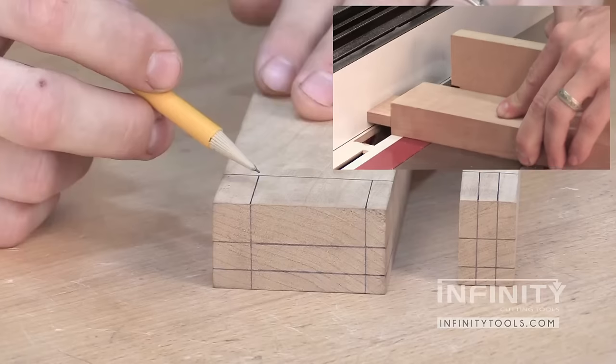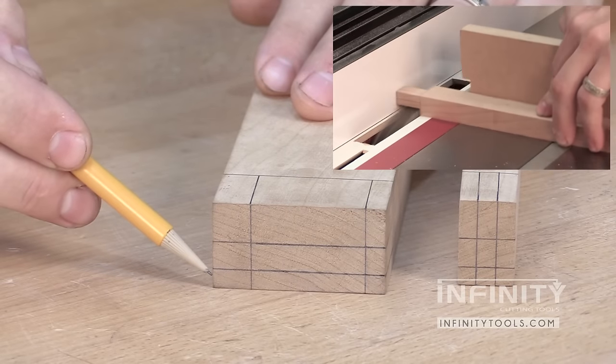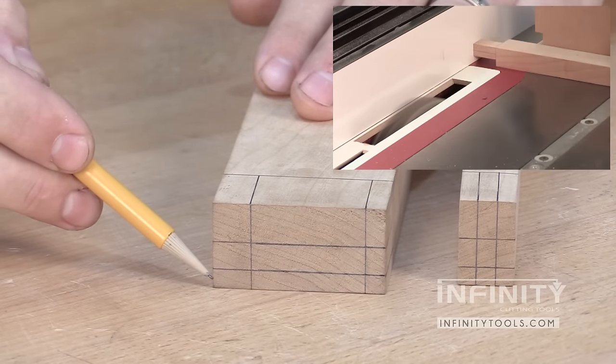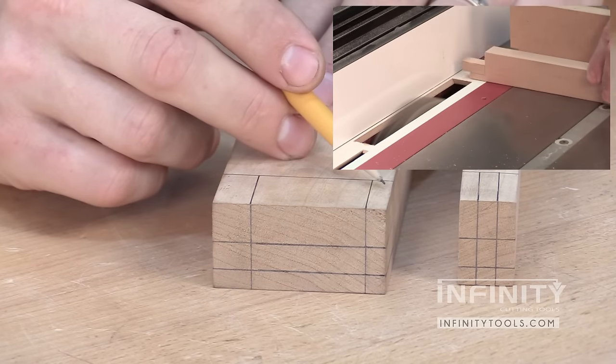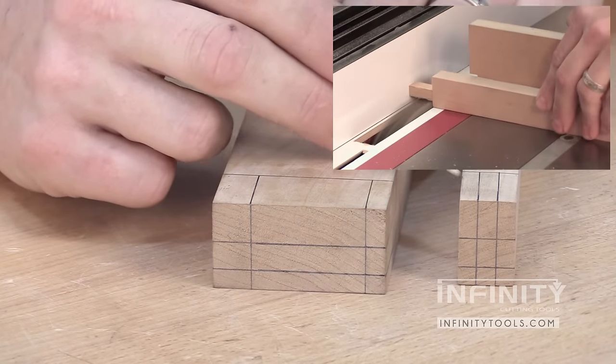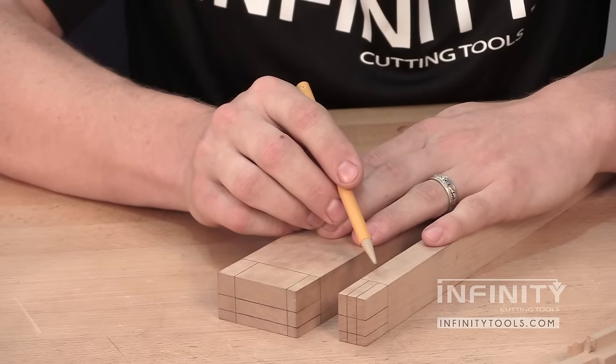I'm then going to lower my dado set to a quarter of an inch and make a cut on the underside to expose the bottom of my tenon, and also on the opposite edge. I'm going to make that quarter inch cut on all three remaining edges of my mutton bar as well.